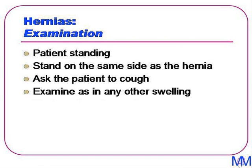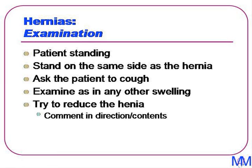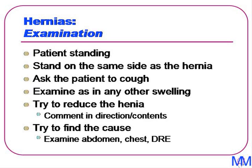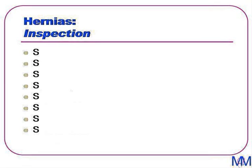We should examine as for any other swelling, try to reduce the hernia commenting on the direction in which it reduces and the contents, and then identify a cause for the hernia by examining the abdomen, performing a digital rectal examination, and assessing the external genitalia. We should take a systematic approach starting with inspection, which consists of eight S's: sight, size, shape, symmetry, surface, skin overlying, scars, and special signs.